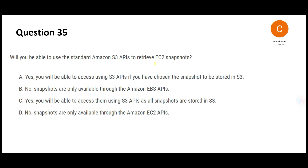This question asks: you have an EC2 instance and you have taken a snapshot — would you be able to use S3 APIs for this purpose? Let us be very clear. If you are using EC2 snapshots, you should use EC2 APIs. Option A says you use S3 APIs if your snapshot is stored in S3.